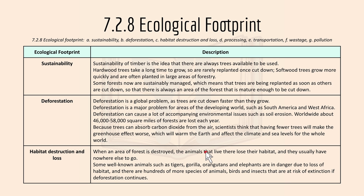Habitat destruction and loss: when an area of forest is destroyed, the animals living there lose their habitat and have nowhere else to go. Well-known animals such as tigers, gorillas, orangutans, and elephants are endangered due to habitat loss. Hundreds more species of animals, birds, and insects are at risk of extinction if deforestation continues, which is a very serious concern as animals and insects play an important role.